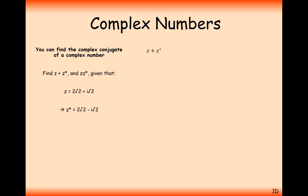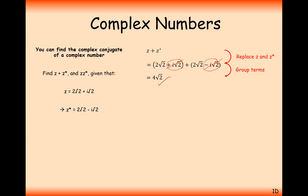Let's have a go at a very similar question. We are adding together the complex number and its conjugate, then multiplying the complex number and its conjugate, with the numbers 2 root 2 and i root 2. So Z star is obviously 2 root 2 minus i root 2. Adding the two values together, we've got one positive part and one negative imaginary part, so those cancel out. Adding 2 root 2 and 2 root 2, we get 4 root 2 — once again, purely real, no imaginary parts.